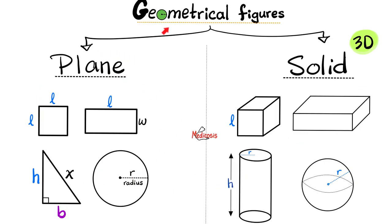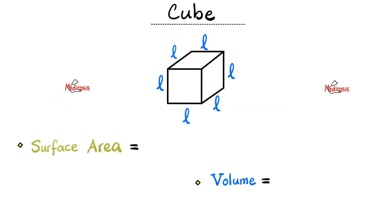We're done with the plane two-dimensional geometrical figures. Now let's talk about the solid three-dimensional geometrical figures. This is the cube — it's made of six surfaces, each surface is a square. So what's the surface area? It's the surface area of the square multiplied by six, because there are six squares: one up, one down, one anterior, one posterior, one to the left, one to the right.